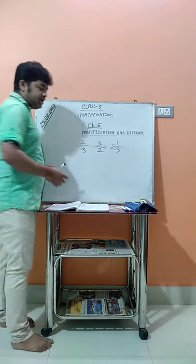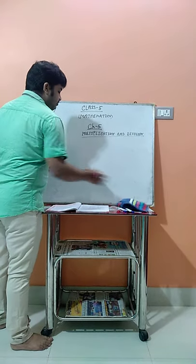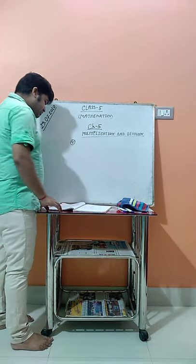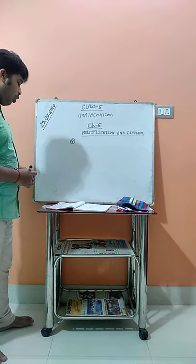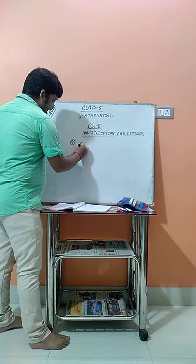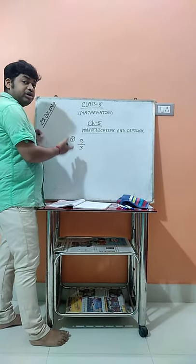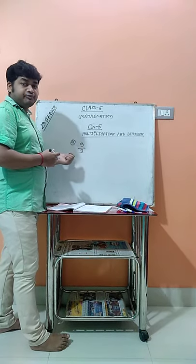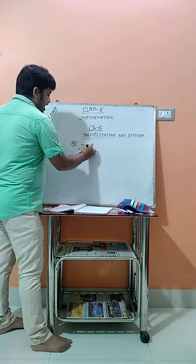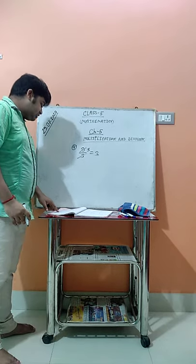In my last class I completed up to number 3, so today we will start from number 4 onwards. Number 4 asks you to write a mixed number or a whole number for each fraction. First is 9/3. If it is possible to divide evenly, the result is a whole number; if not, the result is a mixed fraction. So 9 divided by 3 equals 3 — the answer is the whole number 3.